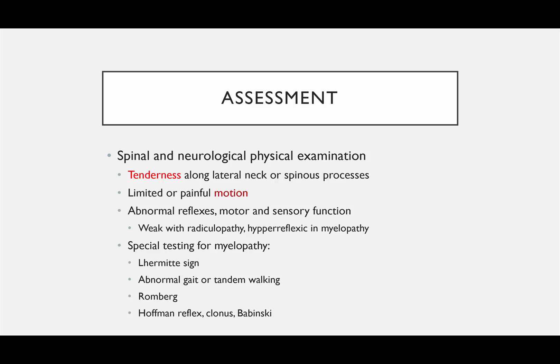On exam, look for tenderness along the lateral neck and spinous processes, pain with motion, abnormal reflexes, and motor and sensory dysfunction. With radiculopathy, you typically see weakness. With myelopathy, you look for hyperreflexia and upper motor neuron signs. Special tests for myelopathy include Lhermitte's sign, abnormal gait, tandem walking, Romberg sign, Hoffman reflex, and Babinski.